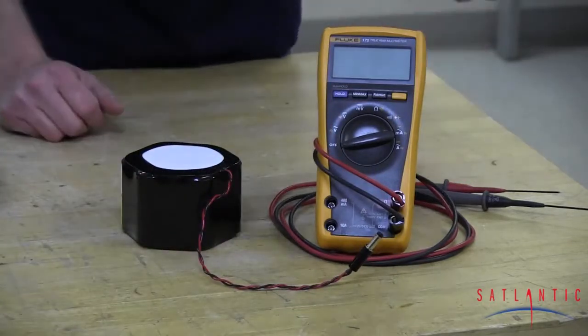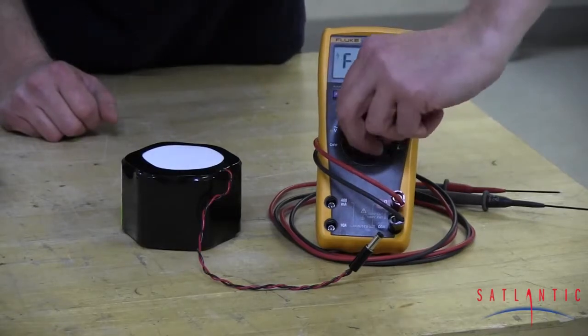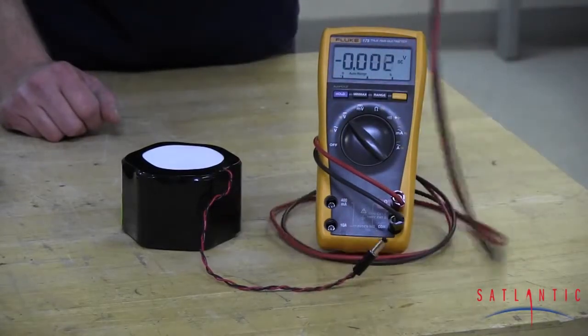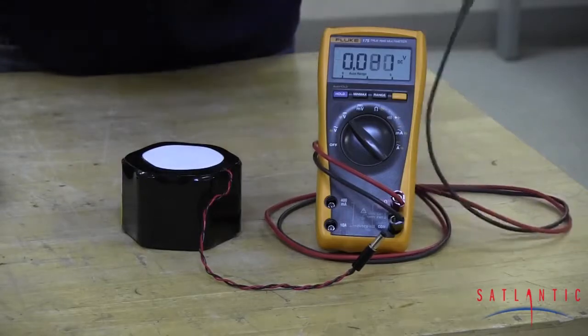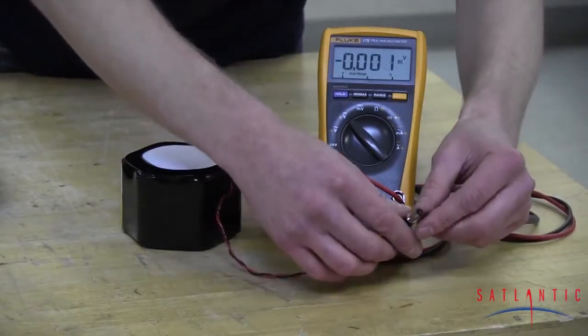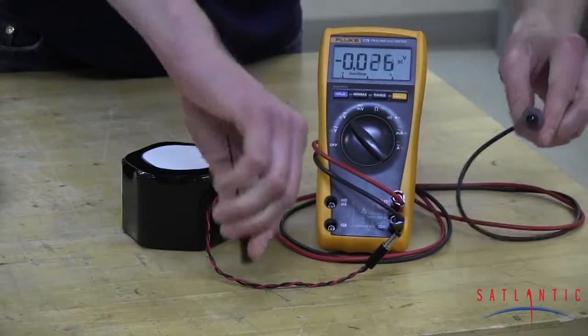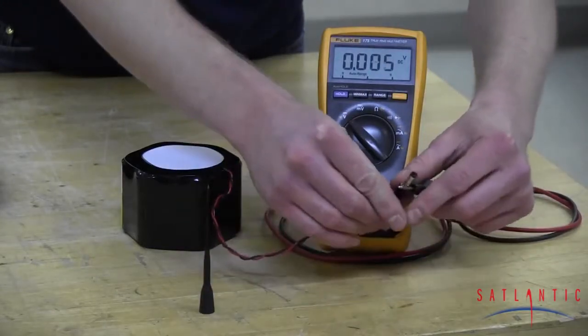What we're going to do is check the voltage using our digital multimeter. You're going to turn that to volts DC, and using your common lead, that's going to go on the exterior of the barrel connector.